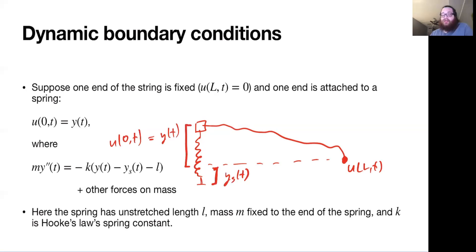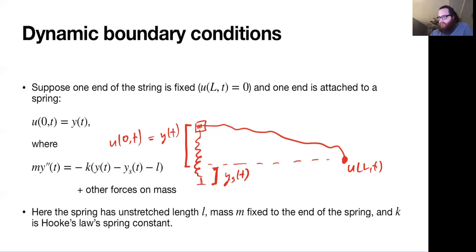The length of the spring when it's unstretched is this quantity L. And then finally the spring has a mass, say m, at the top of the spring where our string is attached. So those are some of the physical quantities of interest.